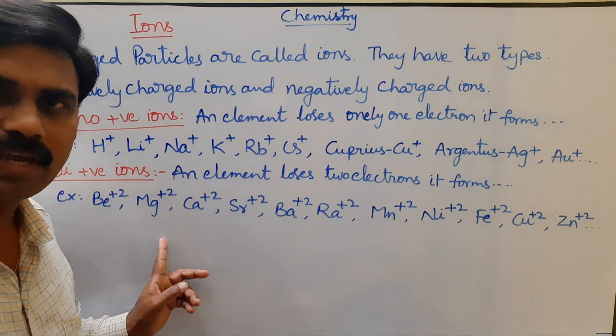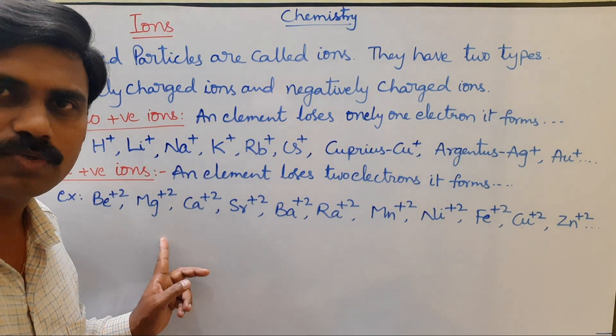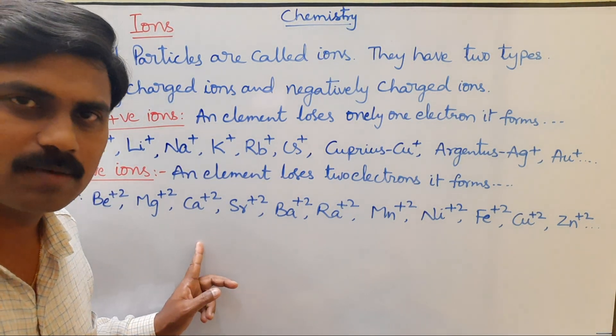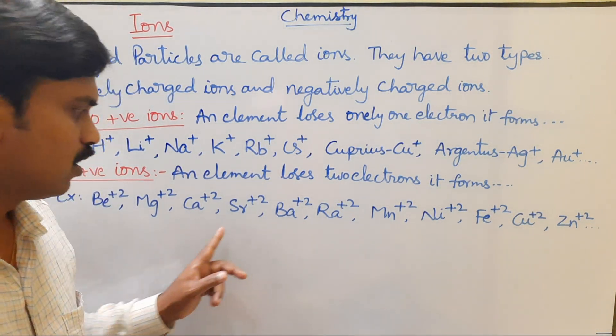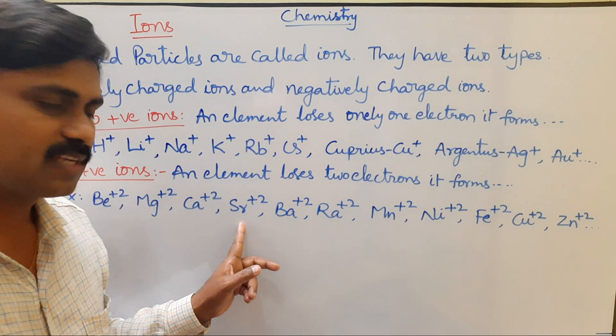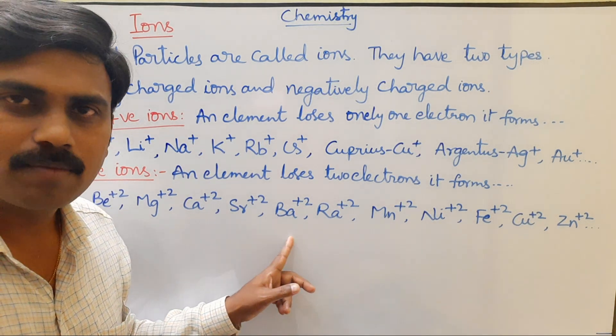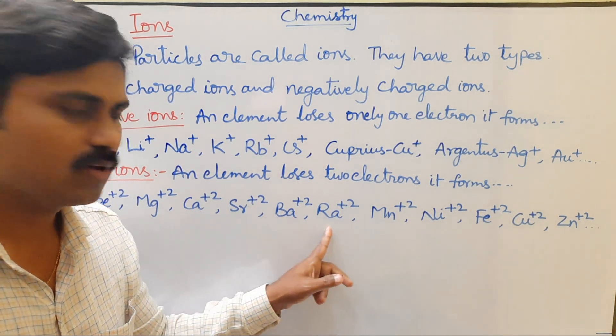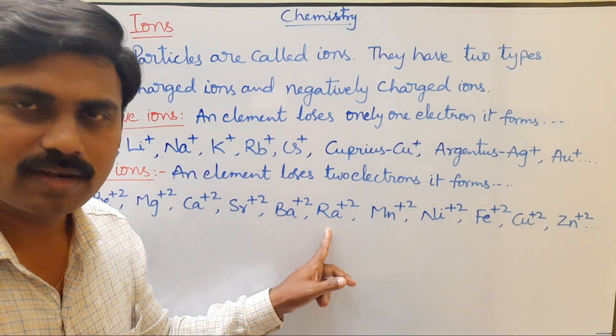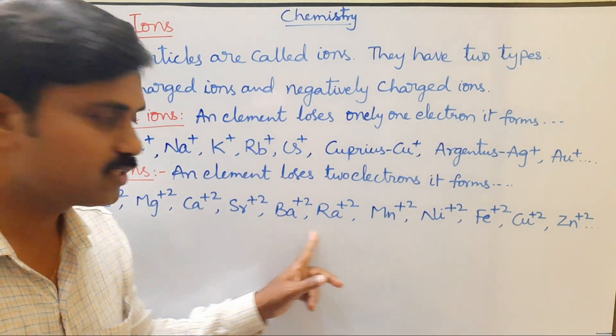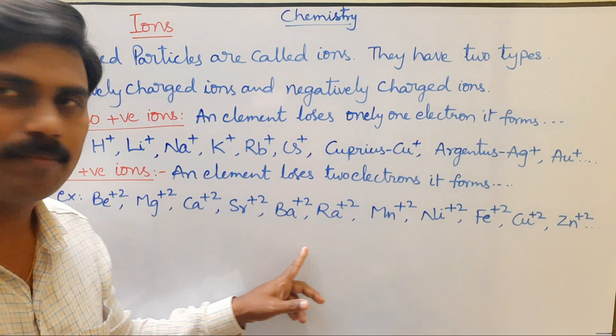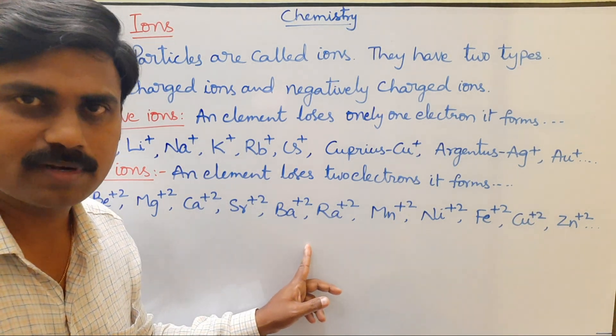Examples: beryllium ion Be²⁺, magnesium ion Mg²⁺, calcium ion Ca²⁺, strontium ion Sr²⁺, barium ion Ba²⁺, radium ion Ra²⁺. These are all Group 2 elements — the alkaline earth metals — and they form di-positively charged ions.